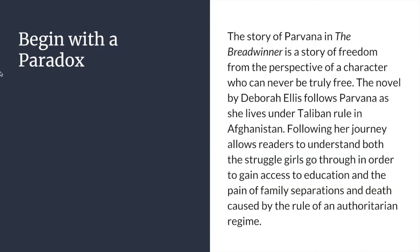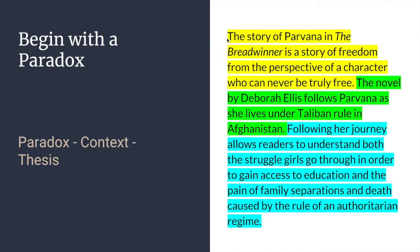Let's take a look at another example. This one begins with a paradox — go ahead and pause the video and read it through. Hopefully you divided it this way: we start with a paradox, something that seemingly cannot be true. 'The story of Parvana in The Breadwinner is a story of freedom from the perspective of a character who can never be truly free.' That's ironic — how can you have a story about freedom in which there is no freedom? It creates curiosity in the mind of the reader.